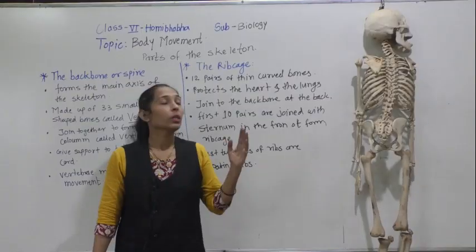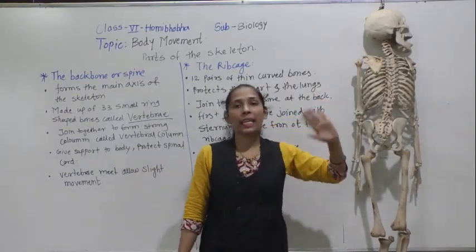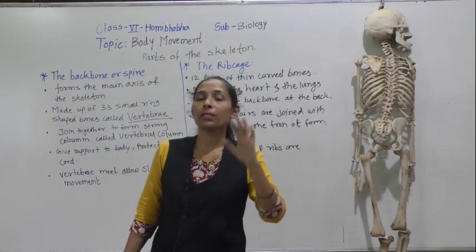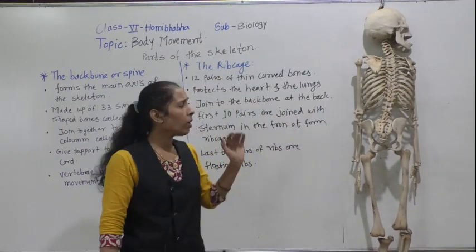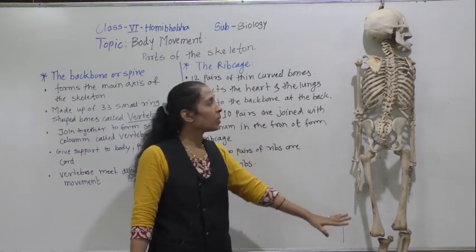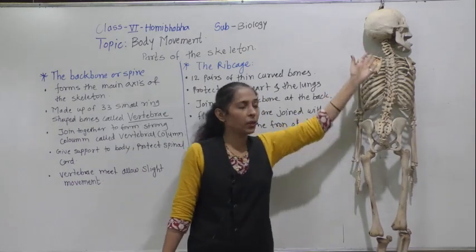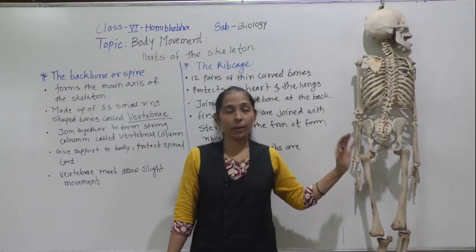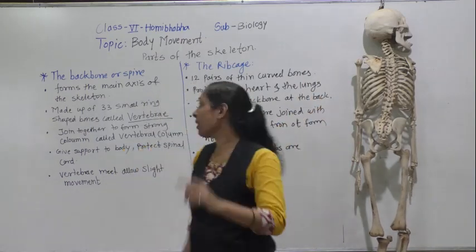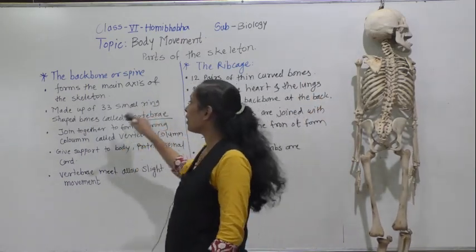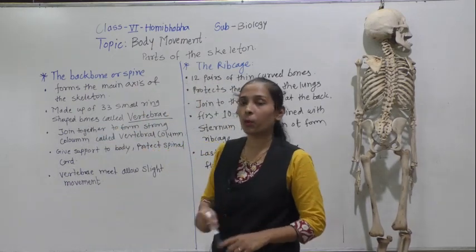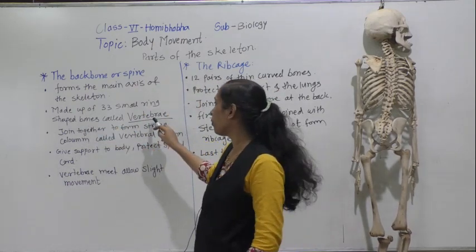The backbone is the main axis of the skeleton, and all the bones in our body are connected to it. The backbone is made up of 33 small ring-shaped bones, and those small ring-shaped bones are called vertebrae.